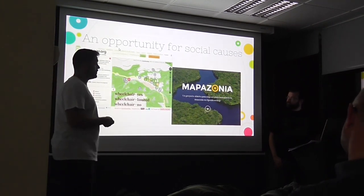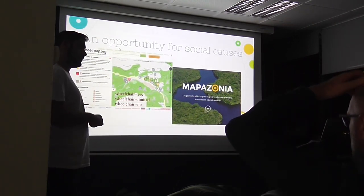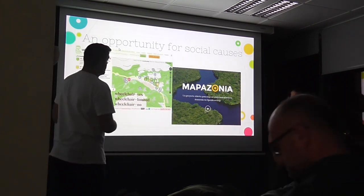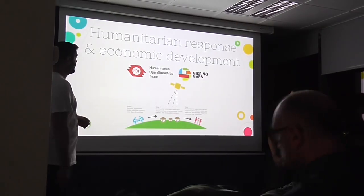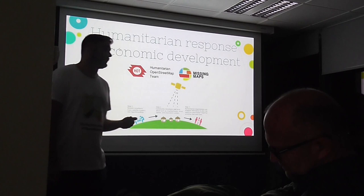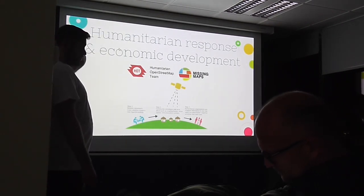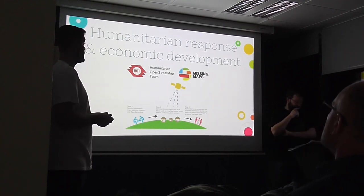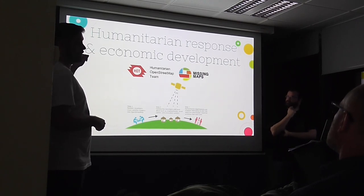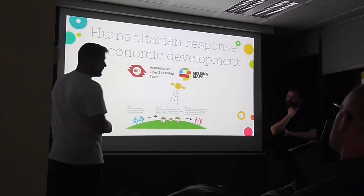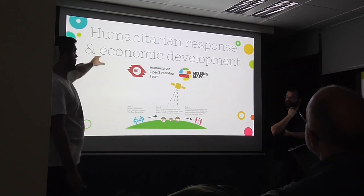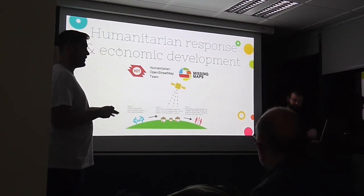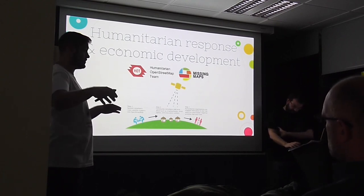There are also global projects like Mapafonia, which aims to edit the natural zones of the Amazon, mapping different rivers together. Another major use of OpenStreetMap is humanitarian response and economic development — using OSM to create up-to-date data for logistics for Médecins Sans Frontières, Red Cross, and other non-profit organizations. There's a Humanitarian OpenStreetMap Team, which is a link between OSM mappers and organizations like MSF or the Red Cross.